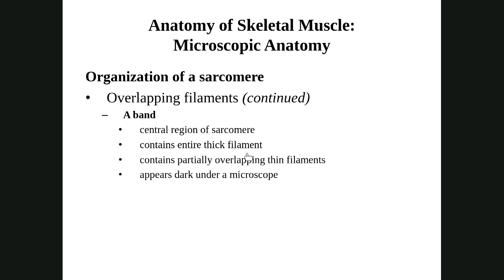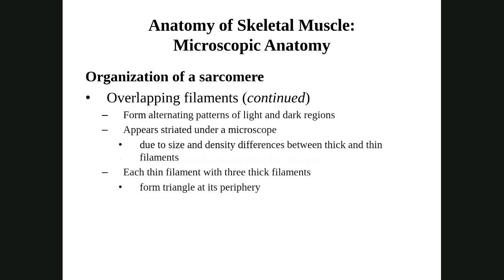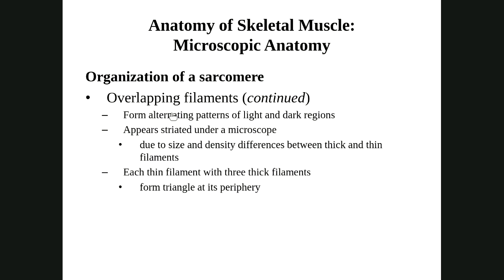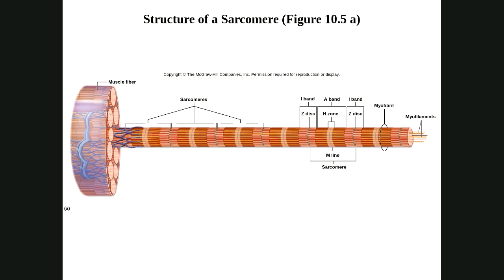Because of the sarcomeres with their alternating light and dark regions, the A-band and I-band create striations — the alternating light-dark pattern that skeletal muscle is well known for. The farther back from the picture you get, the more striated it looks. In a better picture here, we can see multiple sarcomeres lined up: the Z-lines, the I-band containing only thin filaments, the A-band containing all the thick filaments, and the zone of overlap within the A-band where both thick and thin filaments are present.